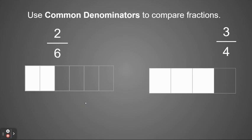If I'm looking at that picture, I can already kind of figure out which one's going to be bigger. But I want to make sure by finding the common denominator. So I know 6 and 4 both have a common denominator of 24.